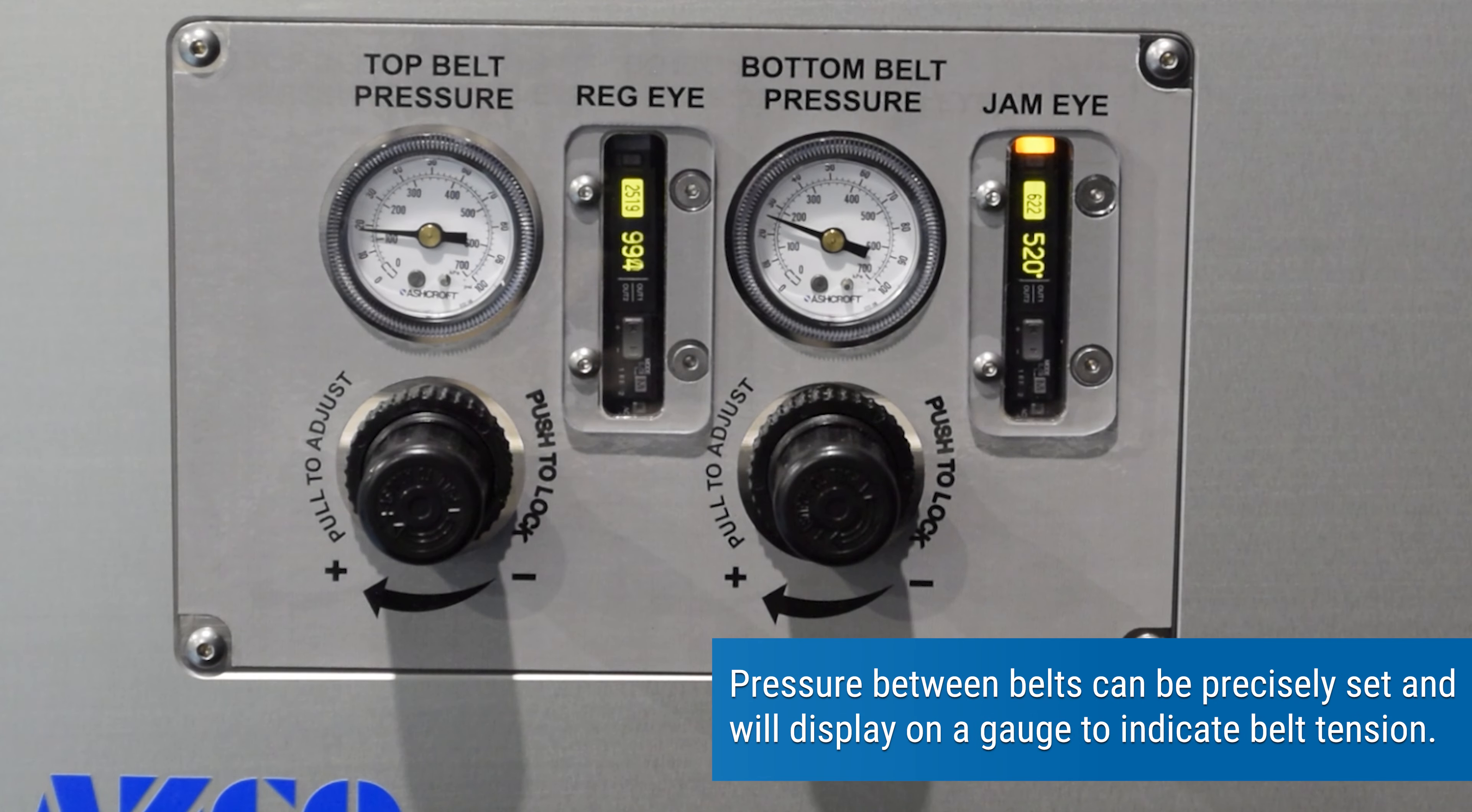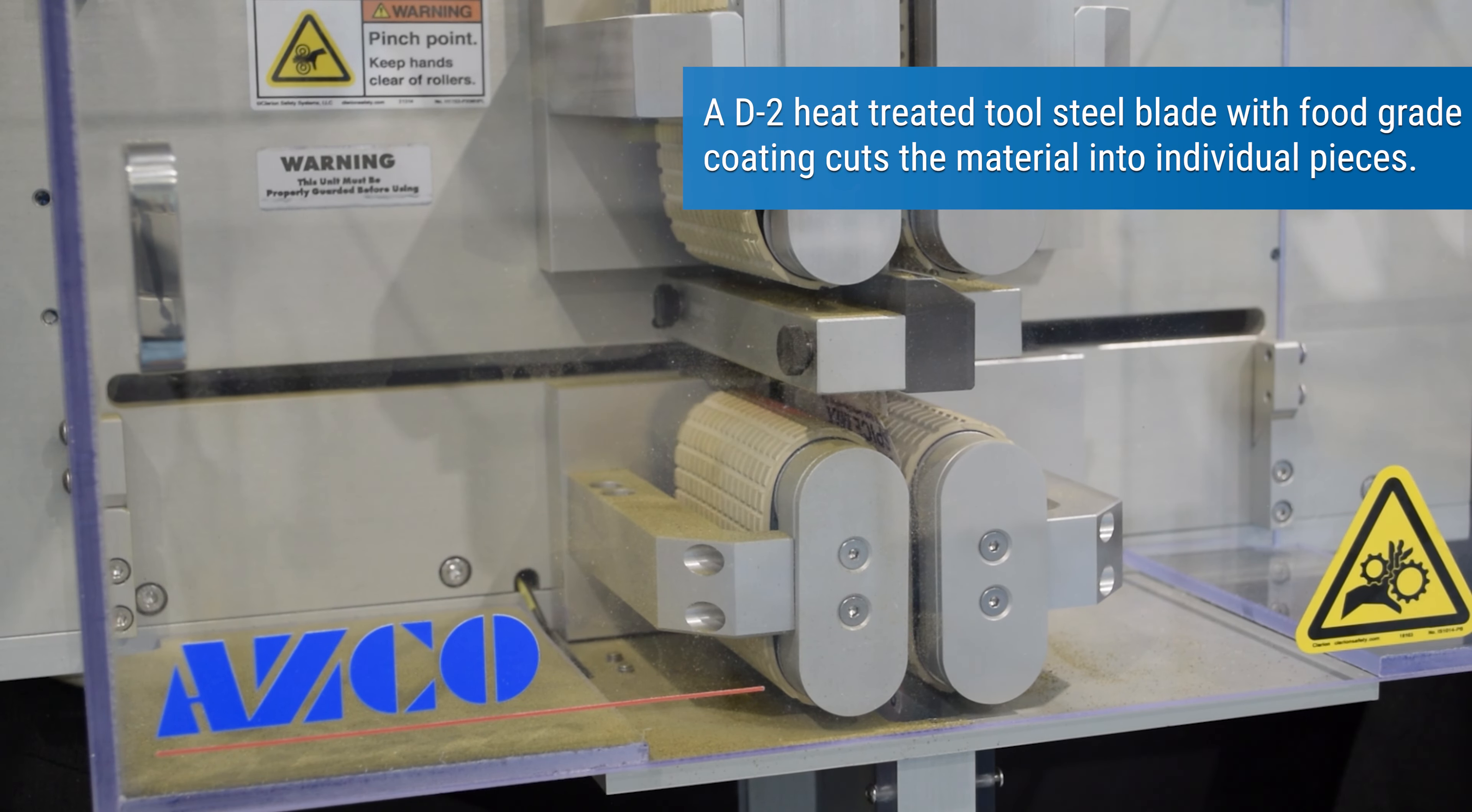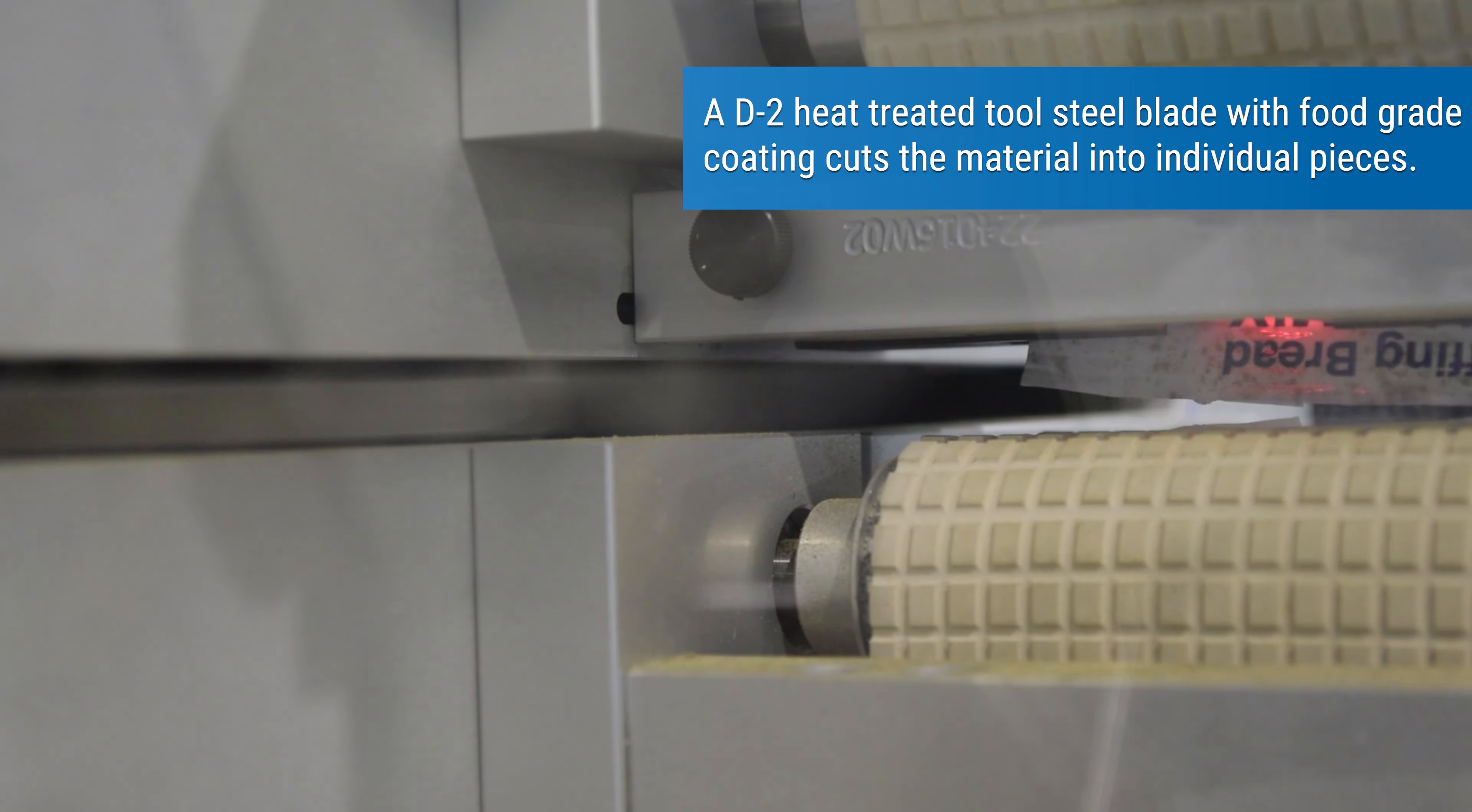Pressure between belts can be precisely set and will display on a gauge to indicate belt tension. A D2 heat treated tool steel blade with food grade coating cuts the material into individual pieces.